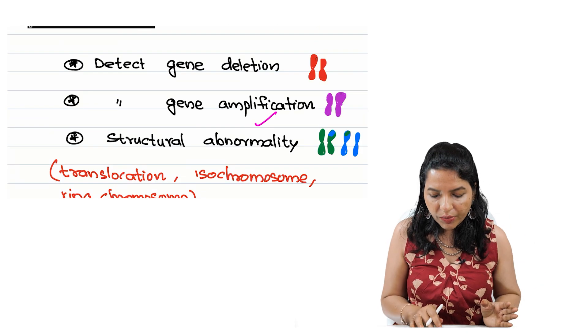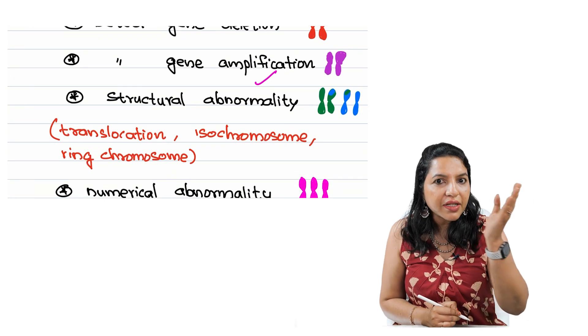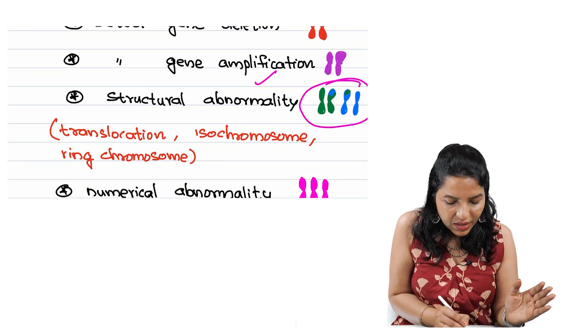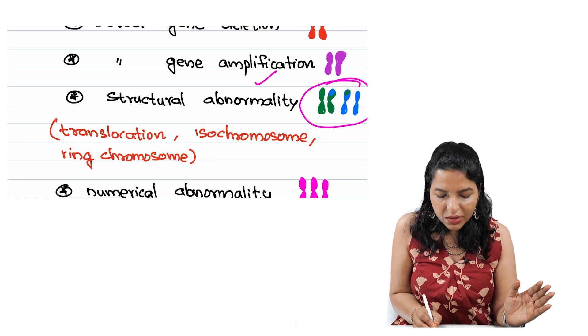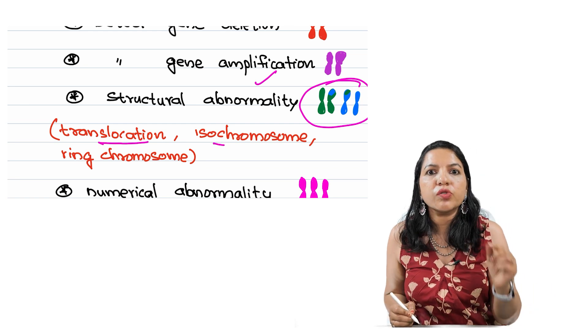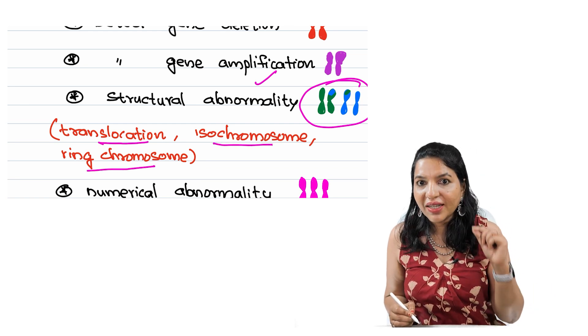Any structural abnormalities. So you can see what is the structural abnormality here. It is a translocation. So any structural abnormalities like translocations, isochromosome, ring chromosome - if a scenario is asked, it is the technique as FISH.